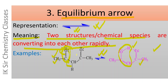Let us see another example of the equilibrium arrow. H₂ reacts with iodine to produce HI, and HI decomposes back into H₂ and I₂. It means this chemical reaction proceeds in both the forward direction and the backward direction simultaneously. The equilibrium arrow is placed between reactants and products of a reversible chemical reaction.